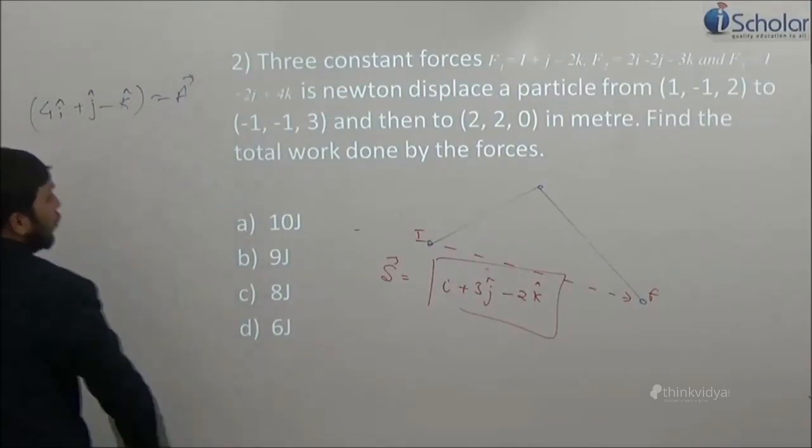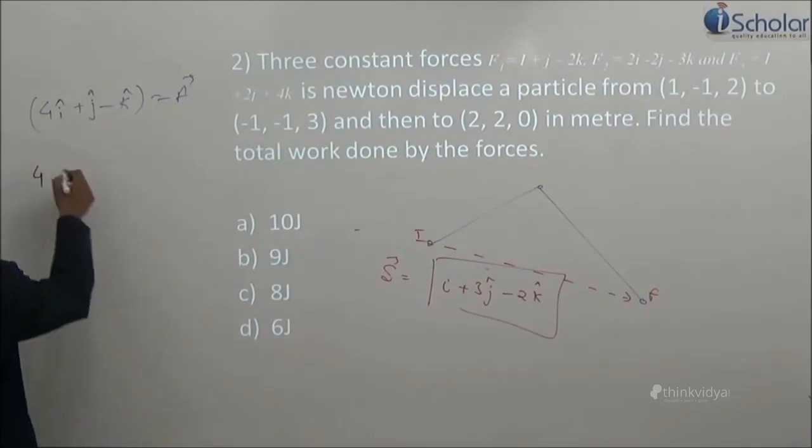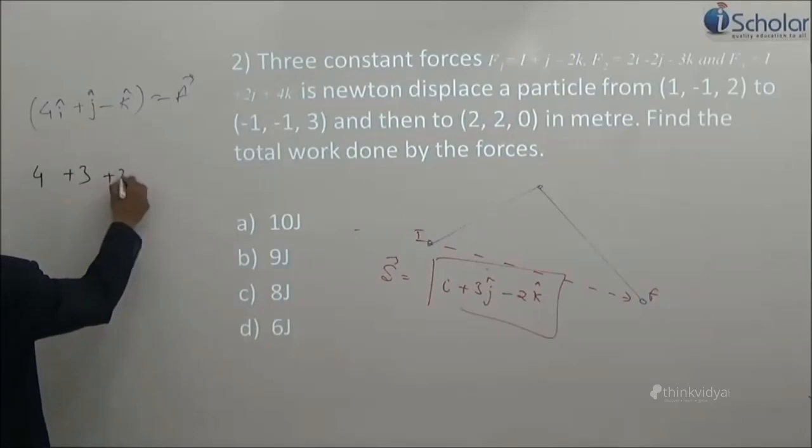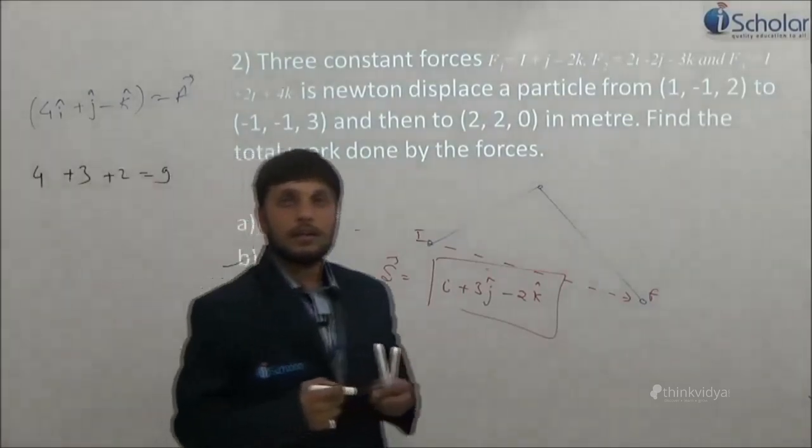What is work done? F dot S. When you will do the dot product, i i 4, j j 3, and k k minus minus plus 2. Answer is 9.